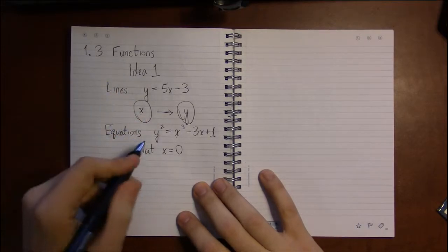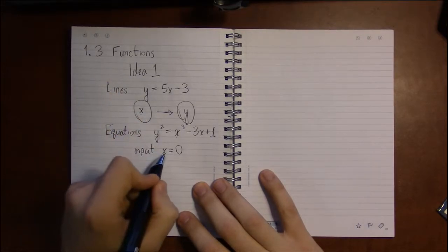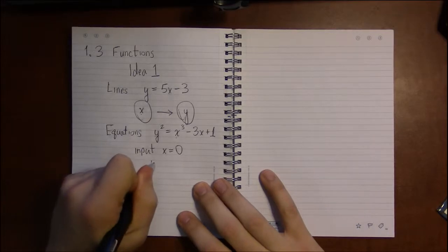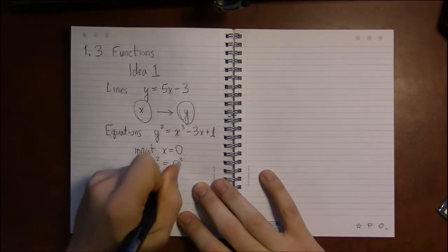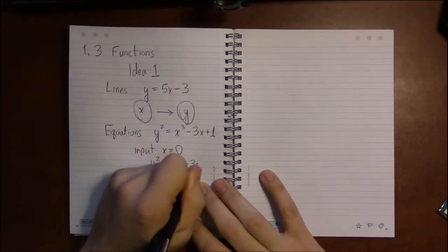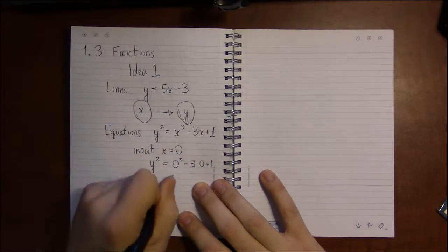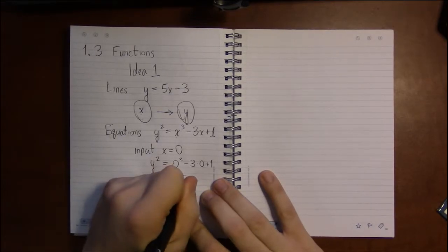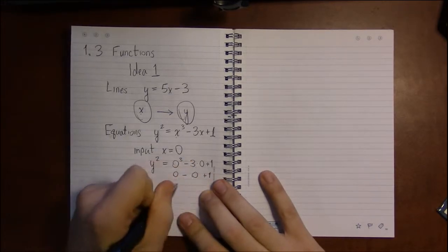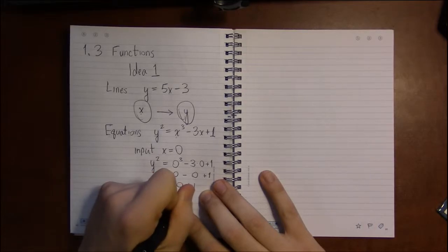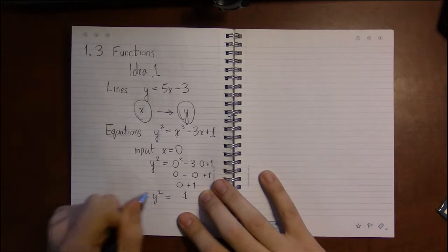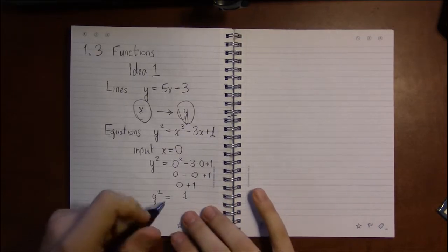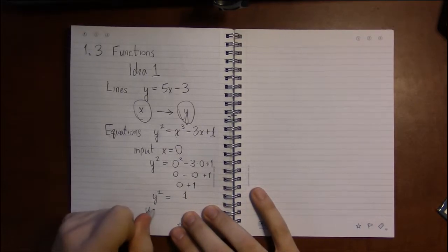We get zero cubed minus three times zero plus one. Well, zero cubed is just zero, three times zero is zero, zero minus zero is zero, zero plus one is one. So y squared could be one. I know one value that y could be—y could be one. One squared is indeed one.